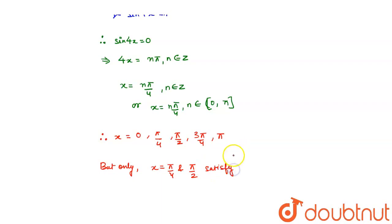3 pi by 4 doesn't satisfy, right? 3 pi by 4 satisfy the equation. So, this is my answer. I hope you understood the explanation. Thank you.